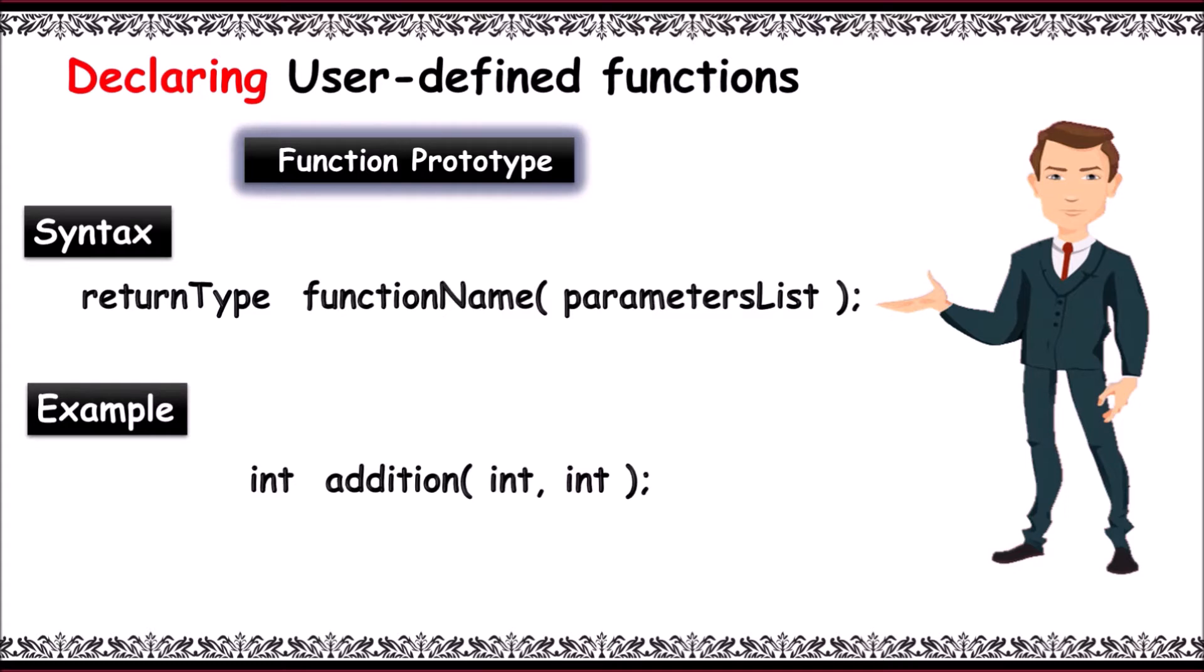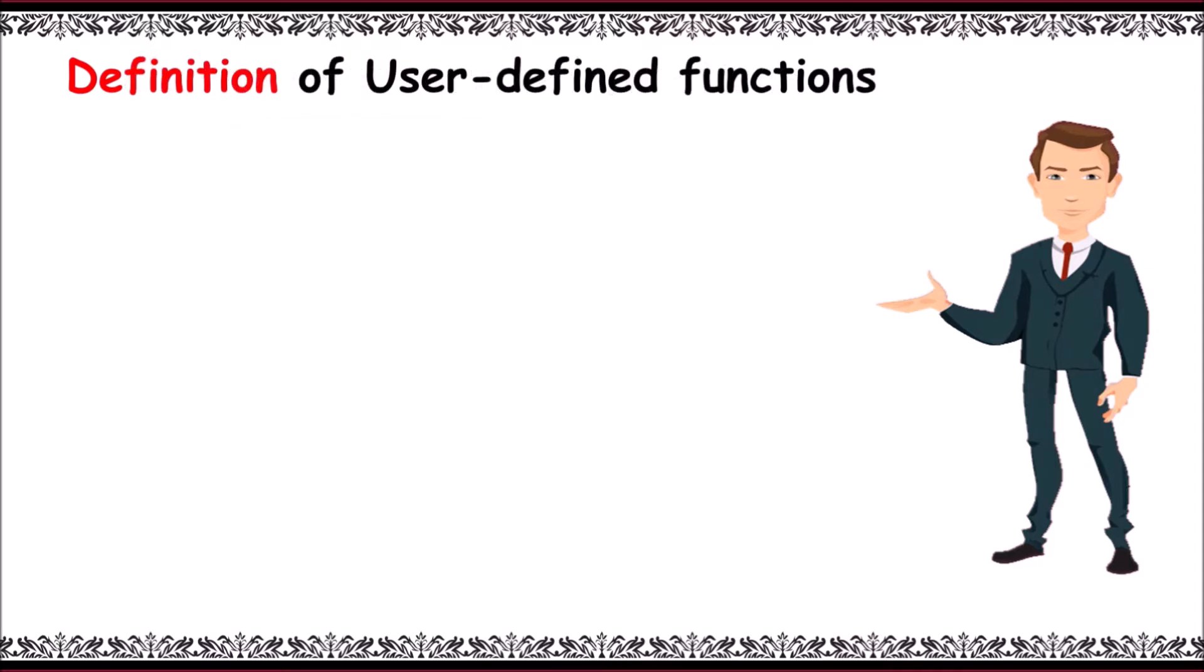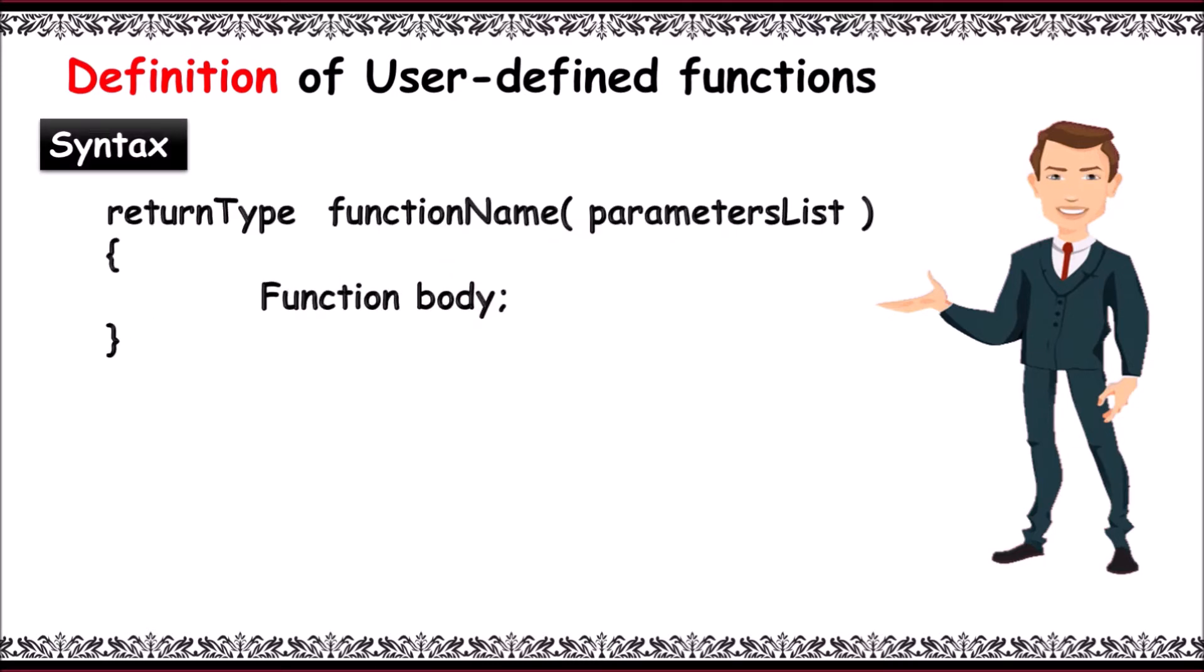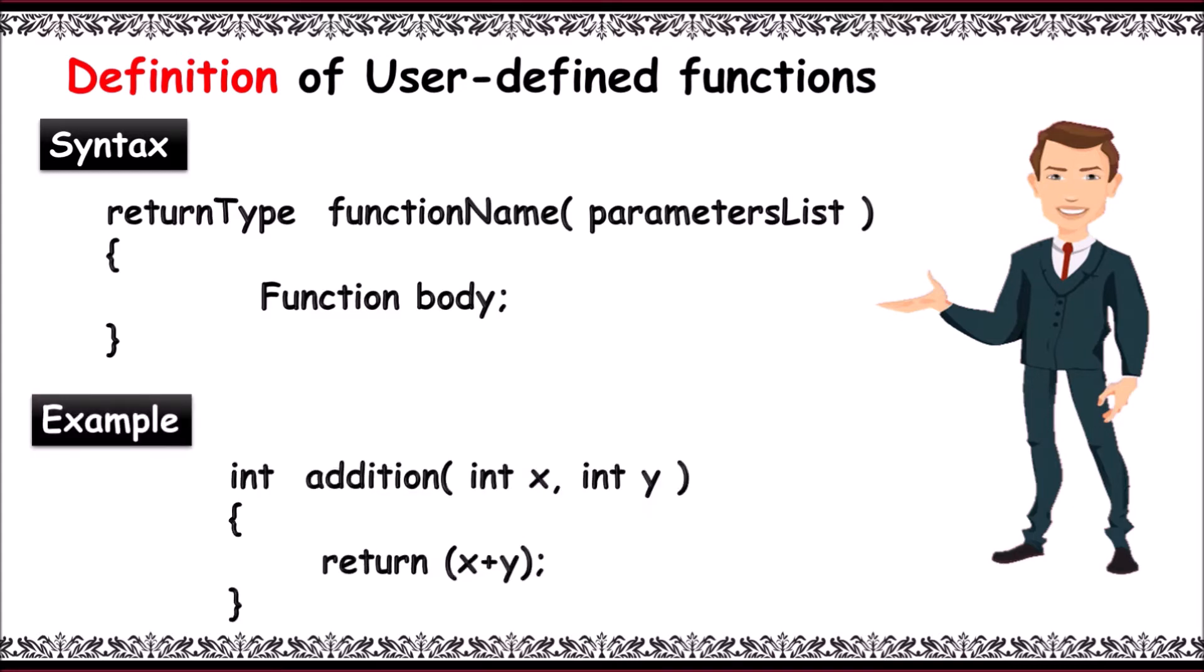Now the function definition contains a block of code to perform a task. In syntax, you define the block of code starting with return type, then function name, then parameters list, followed with body. In example, we have int as return type, addition as function name, and parameters int x and int y, and body with return statement x plus y.